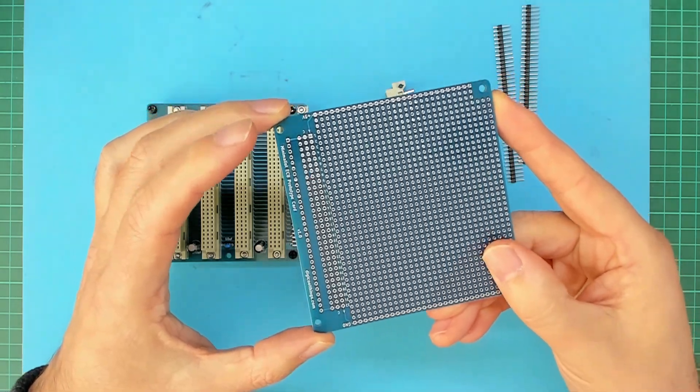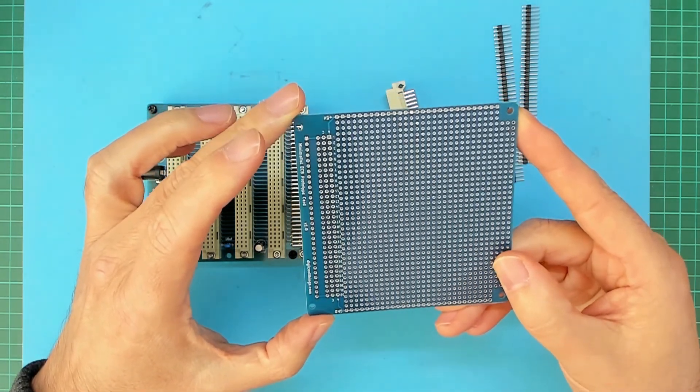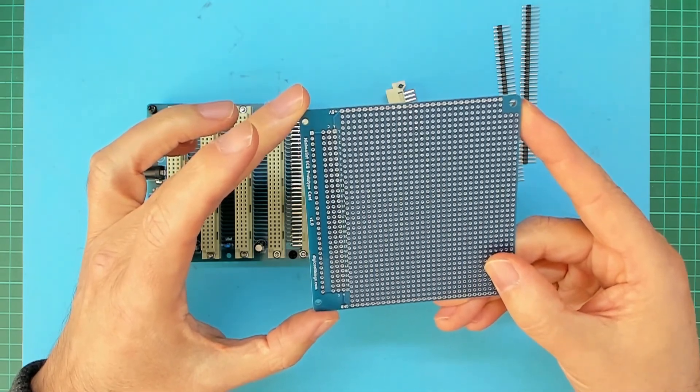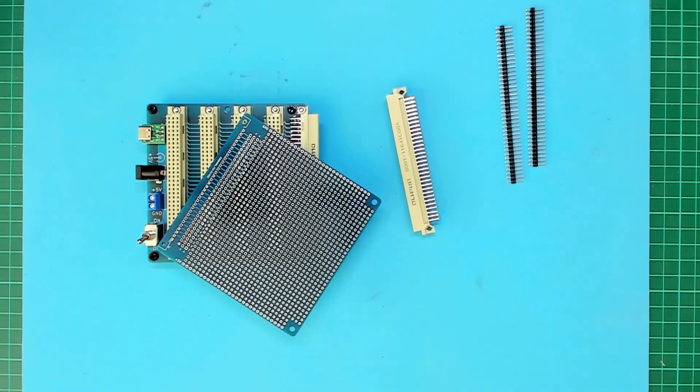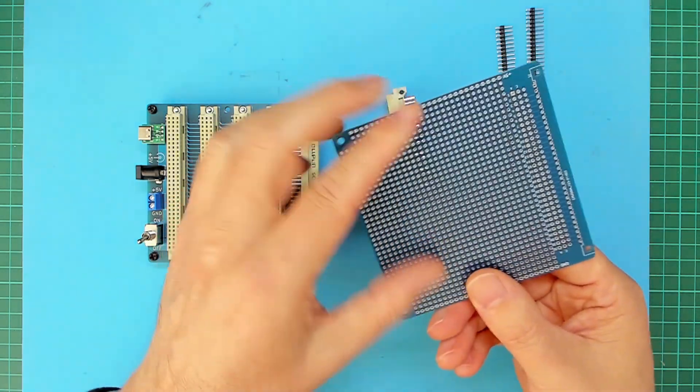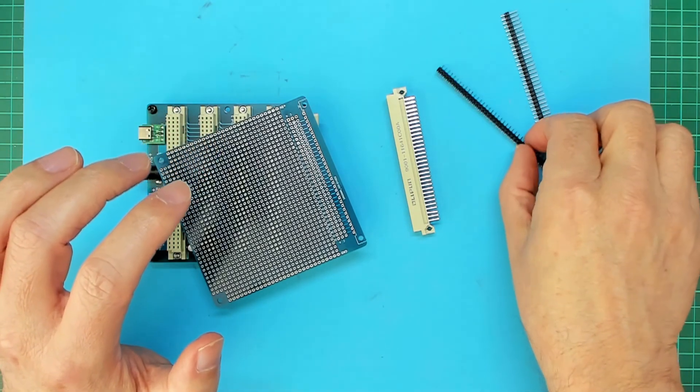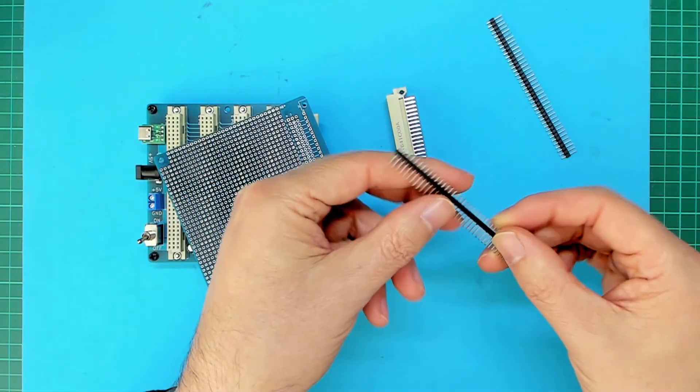So let's get this assembled, which is quite straightforward as we simply have the header pins and a right angle male DIN connector to mount. So I don't have any 32 by 2 pin header strips.